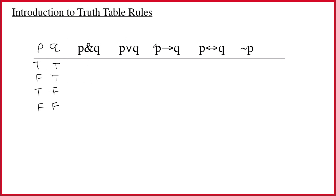Each one of our connectives is a rule for how to operate on these underlying truth values — just like the plus sign and the minus sign are symbols in mathematics that operate on numerical values, the symbols in logic operate on truth values.